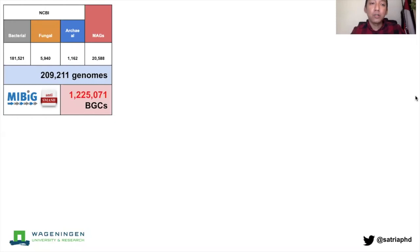We want to take all the sequenced microbial genomes out there in the databases and also some metagenome-assembled genomes and come up with a total of 200,000 genomes and predict the BGCs using AntiSMASH from them and come up with around 1.2 million BGCs.